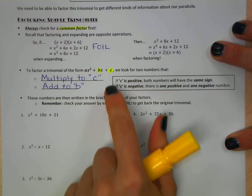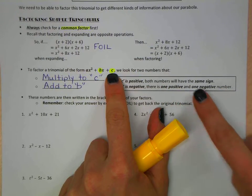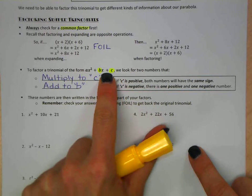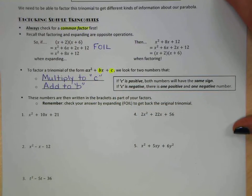A quick hint for you is if you look at c and c is positive, you're going to find two numbers that are both going to be positive or they're both going to be negative. If c is negative, then you're going to have one positive number and one negative number.